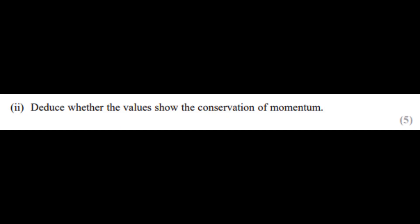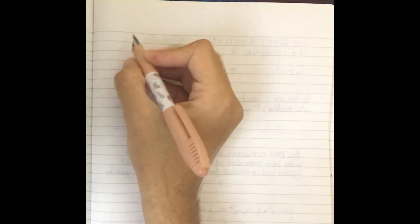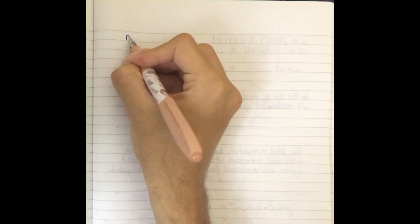We have a question which asks us to deduce whether momentum is conserved. We're going to use momentum values. Before the collision, there was no angle — the velocity to the x-direction was zero for both objects. After the collision, they are going at some angle, so before the collision the momentum is straightforward.